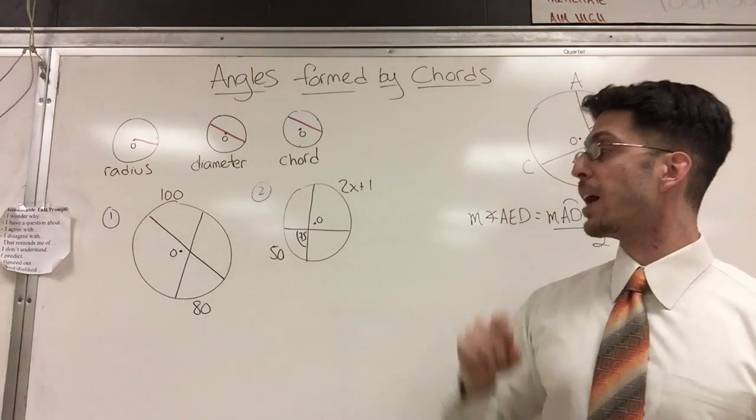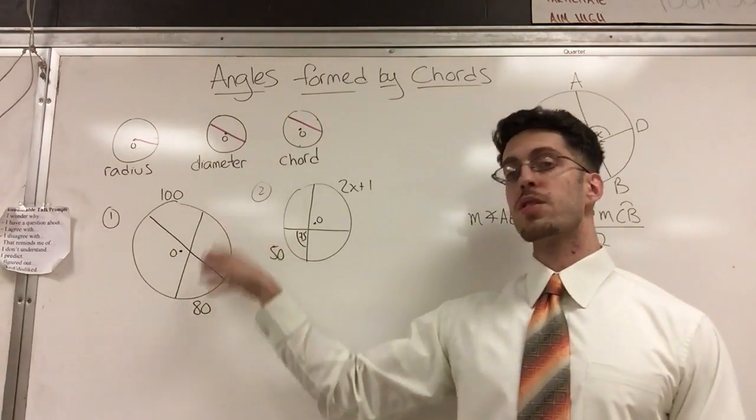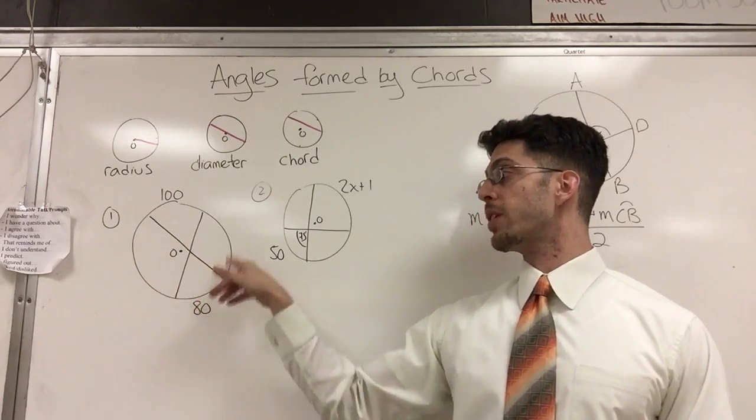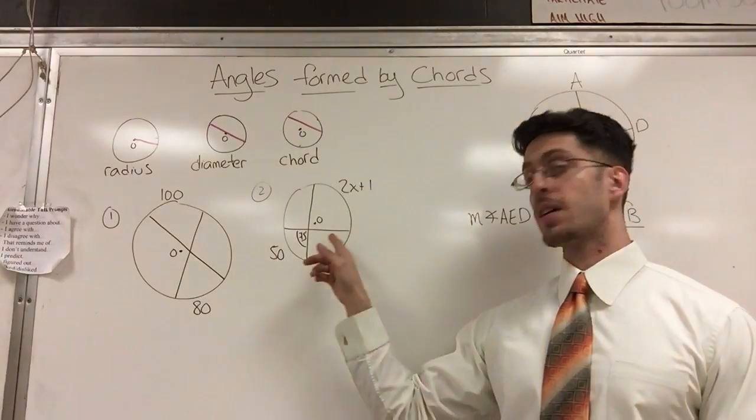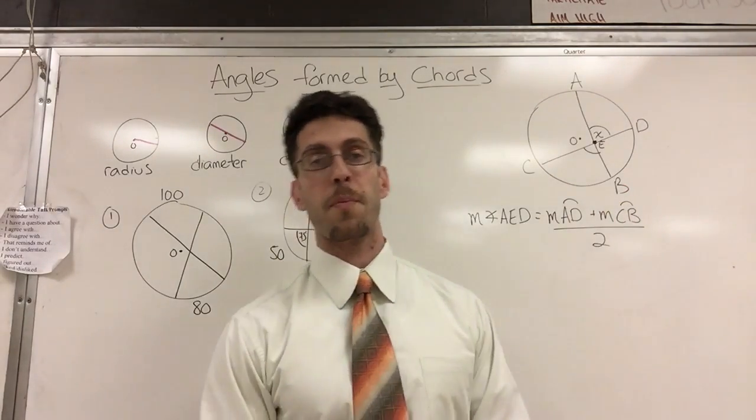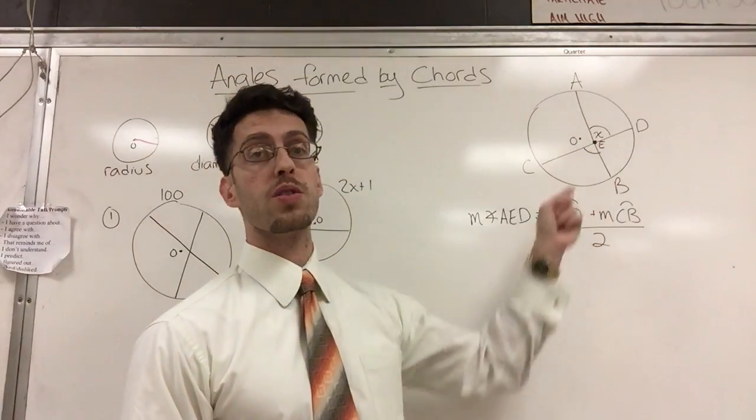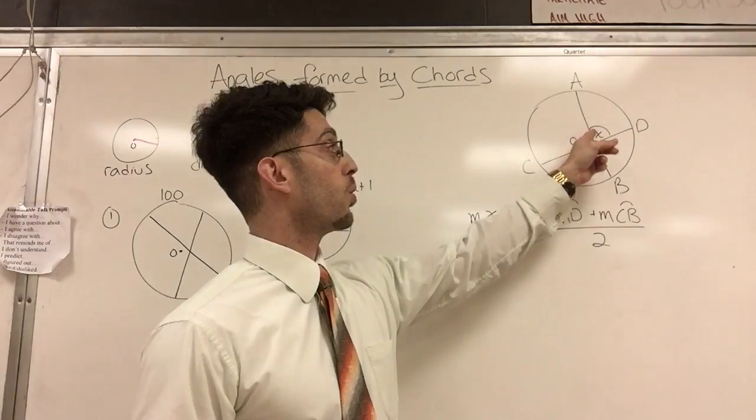Now here's circle O. But if you notice, I put O off for a reason to show you that these are not diameters. These are chords and they intersect. What happens? They form angles. Same thing here. So moral of the story is when you have a circle and you have two chords that intersect, they form four angles just like any other time: one, two, three, four.